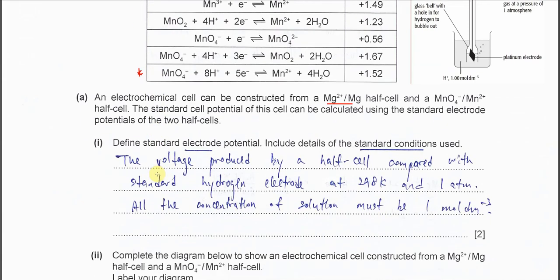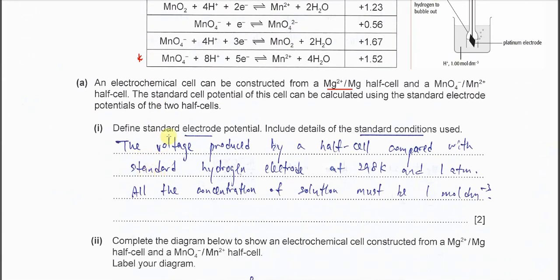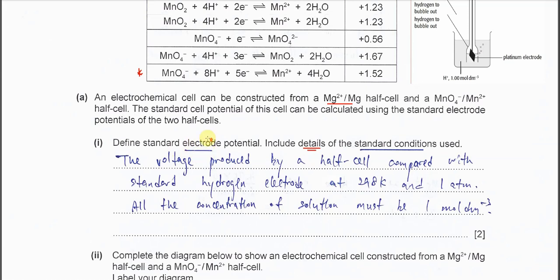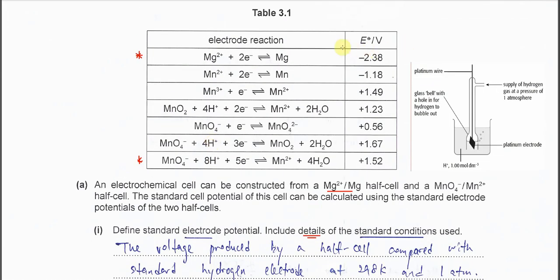Part 1: Define standard electrode potential, including the details of standard conditions. First, what is electrode potential? Electrode potential refers to all these values listed — they all correspond to different types of electrodes, and these electrodes have different potentials.